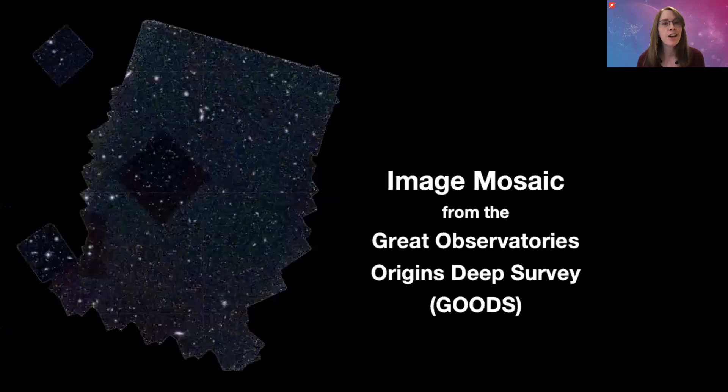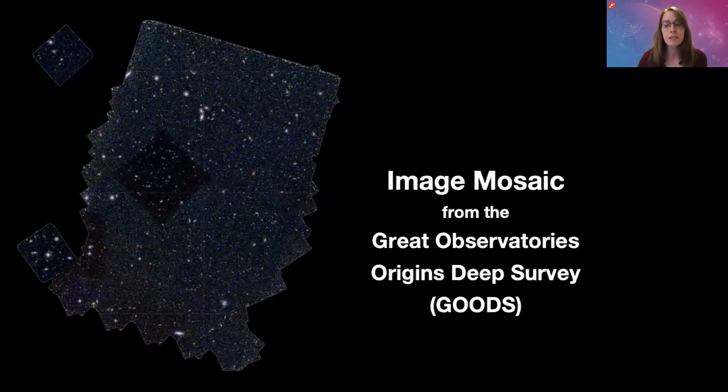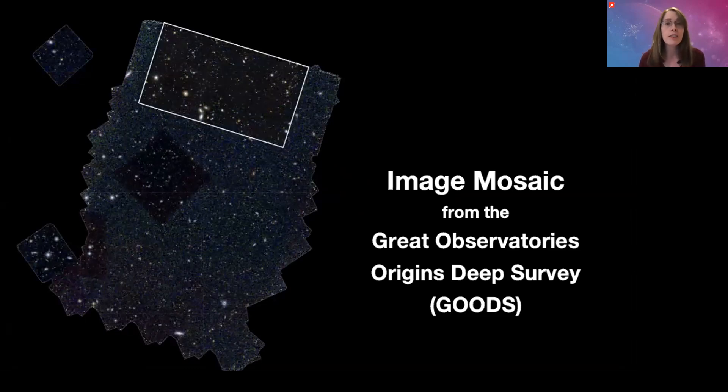They started with a data set called the GOODS Collaboration. It stands for Great Observatories Origins Deep Survey, and it includes the Hubble data we just saw, along with lots and lots of other astronomical images all pieced together into this patchwork or mosaic.